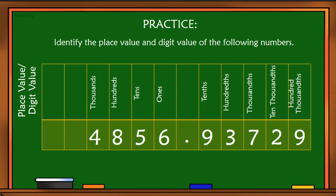Let's do the digit values. Six is equal to 6. Five is equal to 50. Eight is equal to 800. And four is equal to 4,000. Let's go to the decimal numbers. Nine is equal to 9 over 10, or 0.9. Three is equal to 3 over 100, or 0.03.